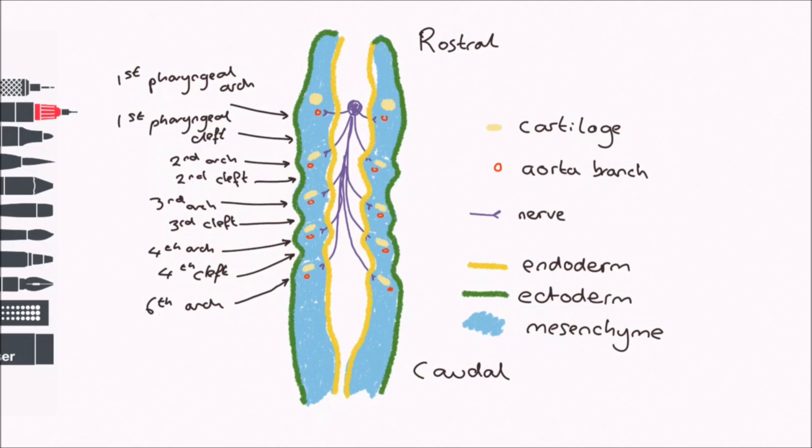The mesenchyme also develops into different skeletal and muscular components, depending on the pharyngeal arch. For example, the mesenchyme from the first arch forms the maxillary, zygomatic, temporal, and mandibular bones, and many associated muscles.